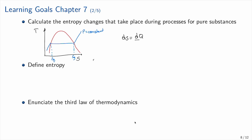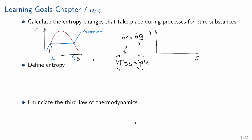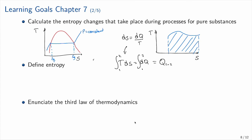Since dS = δQ/T, we can write TdS = δQ by separation of variables. Integrating from state 1 to state 2, the integral of T dS equals the heat transfer from 1 to 2. Therefore, the area under the curve in a T-S diagram represents the heat transfer — analogous to how area under a P-V diagram represents work.